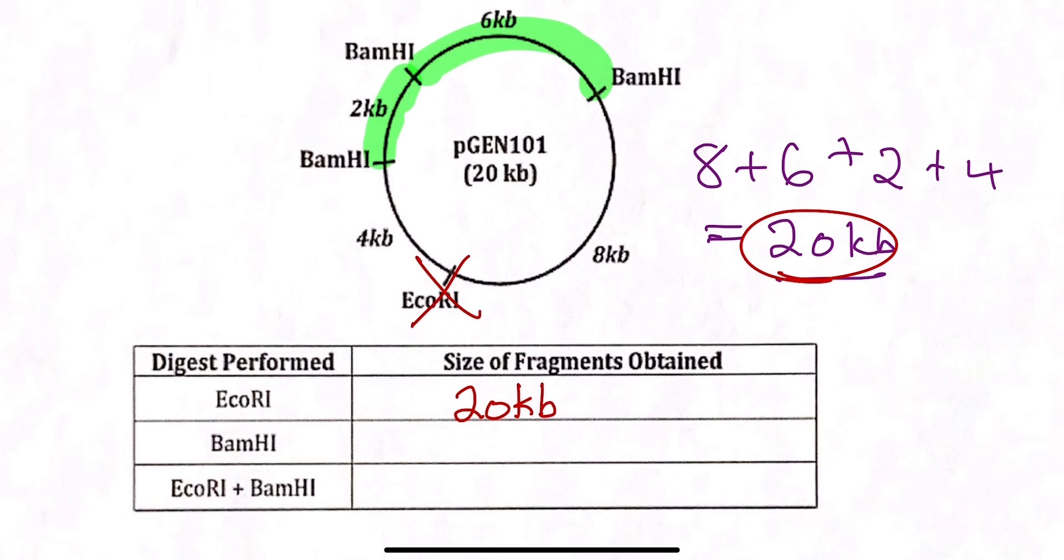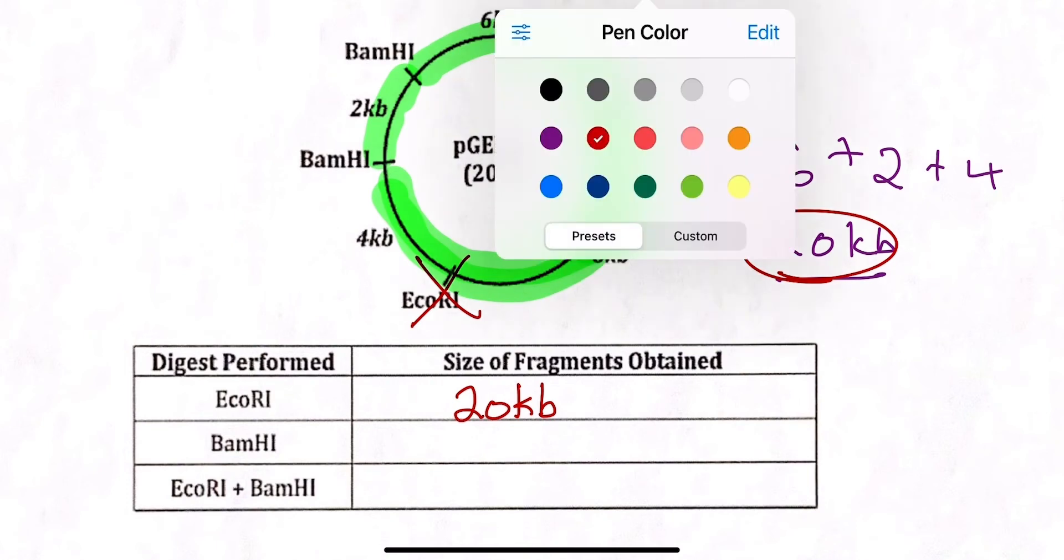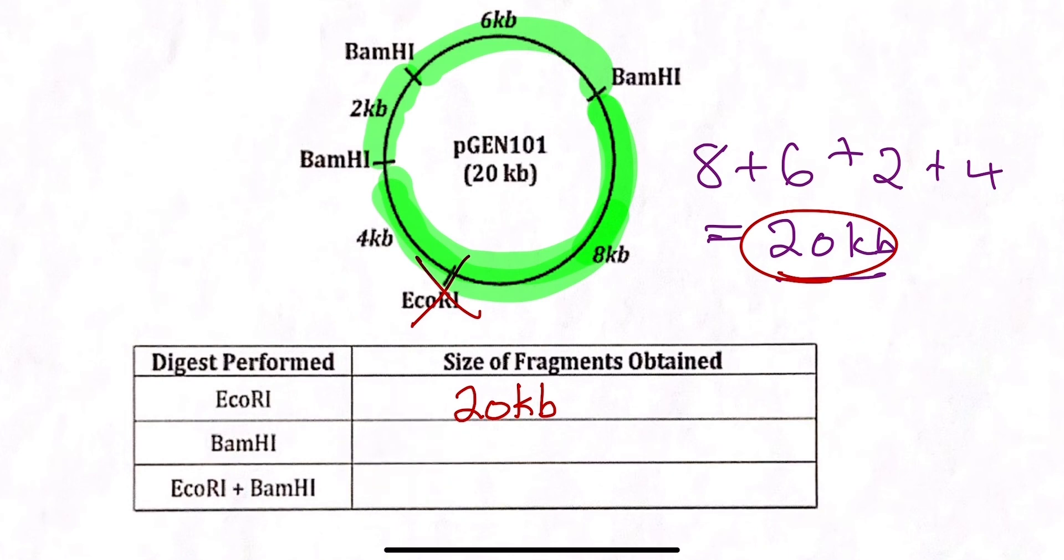So we're ignoring EcoR1 here and we're seeing that BamHI can be also a longer fragment here. So we could have a 12. So let's summarize that. We see a 2, we see a 6, and we see a 12.